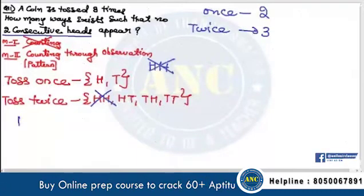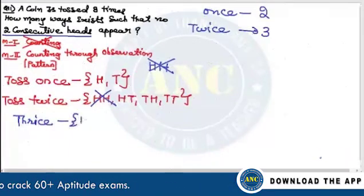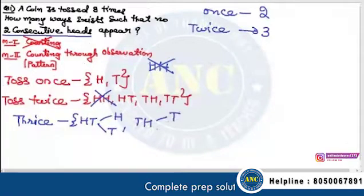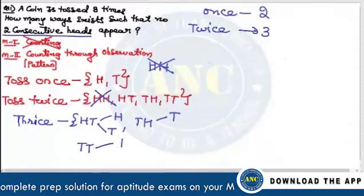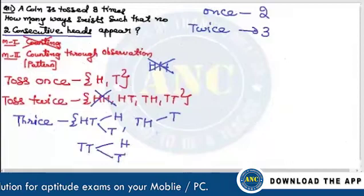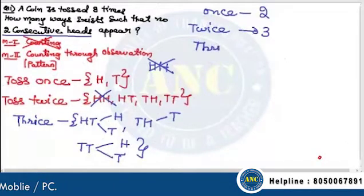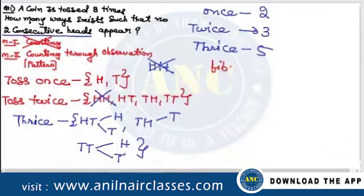If I toss thrice: H cannot be followed by H. The valid combinations are TT, TH, HTH, HT — let me count: TT can appear, TH can appear, HTH can appear, HT can appear. How many ways? One, two, three, four, five. Toss thrice gives 5 ways.